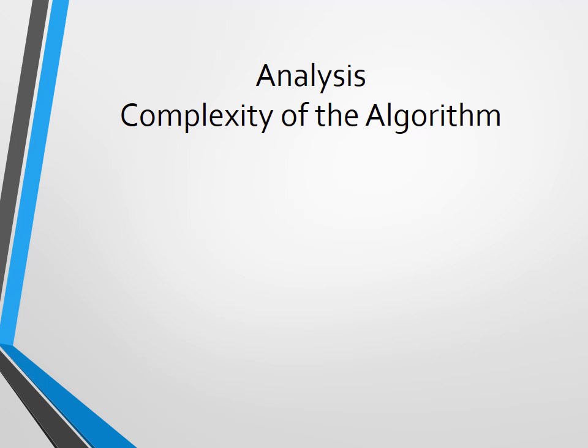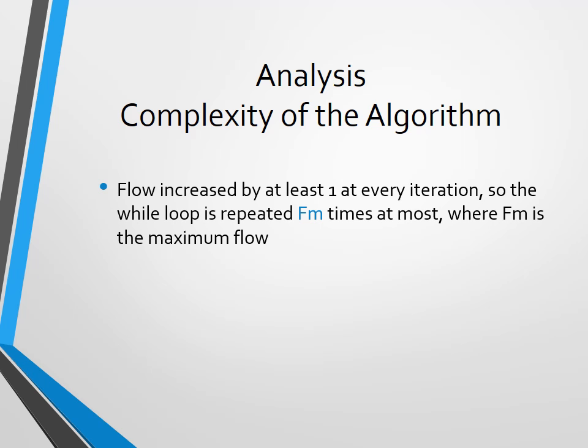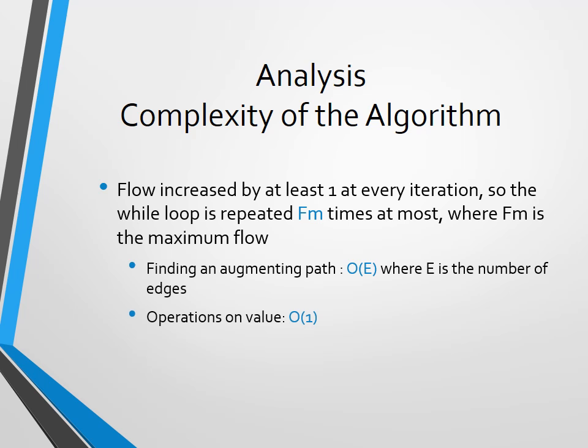Finally, let's take a look at the complexity of the algorithm. The flow is at least increased by 1 at every iteration, because we are dealing with integers. So the while loop is repeated Fm times at most, where Fm is the maximum flow. Within the loop, we find augmentation paths, which run in time O(E), where E is the number of edges. We also do operations on value to update the maximum flow and the capacities on the edges, which run in time O(1). So for each iteration, it runs in time O(E). This means that, all in all, this algorithm runs in time O(E times Fm).